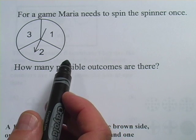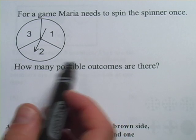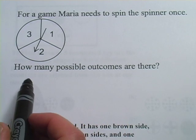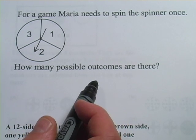In the first one, it says, for a game, Maria needs to spin the spinner once, and here's the spinner. And the question is, how many possible outcomes are there?